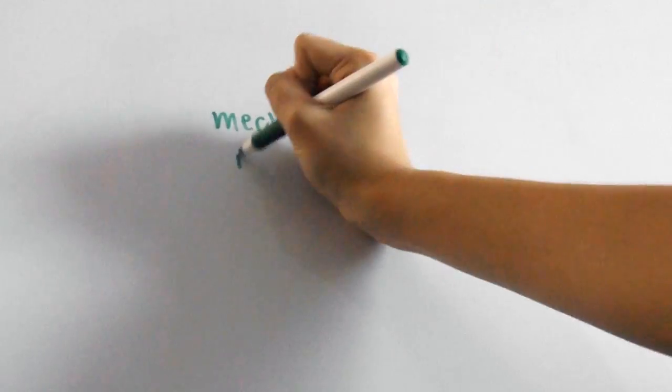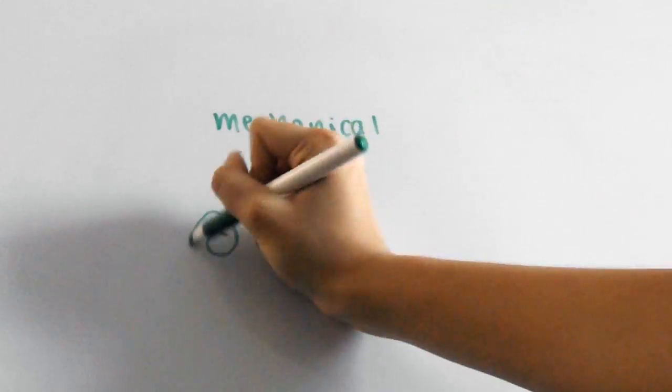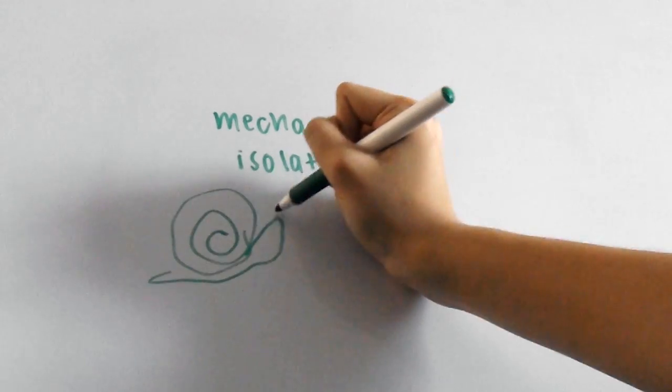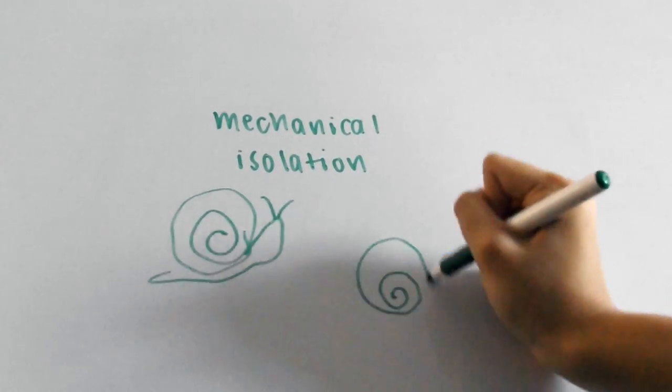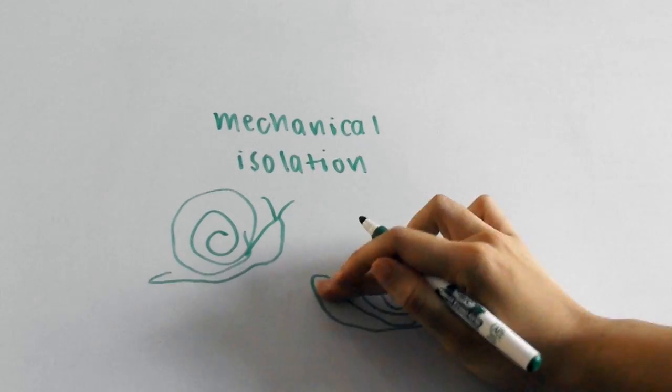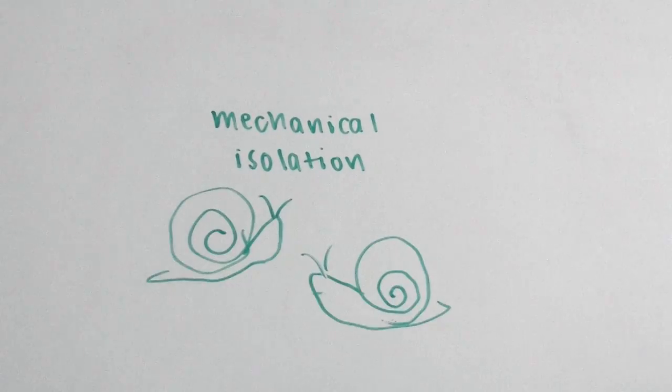Here's an example of mechanical isolation, which is when morphological differences between organisms prevent successful fertilization. These two snails have different spiral directions, so their genital openings are not aligned.